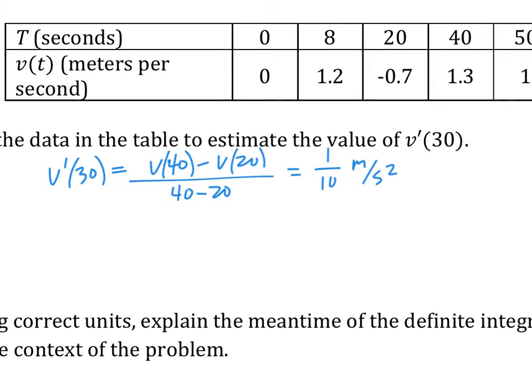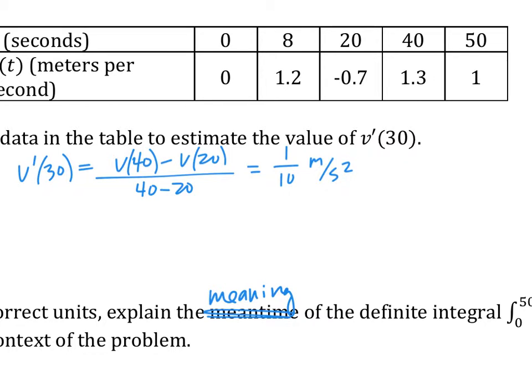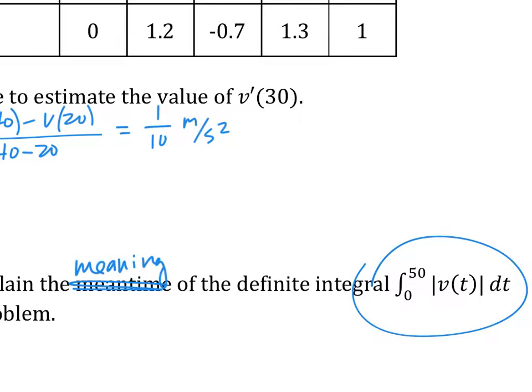Next, using the correct units explain, sorry, meaning. Meaning of the definite integral, this thing. So the question is, what does that mean? What is it trying to represent? Okay, so what is the meaning of this integral? Total distance traveled between 0 to 50. Yeah, 0 to 50. So what you want to do is make sure you hit all the parts. Total distance traveled, that's the absolute value, v of t, and then the integral part. And then you want to say from 0 to 50 because you want to be specific on the time, okay?